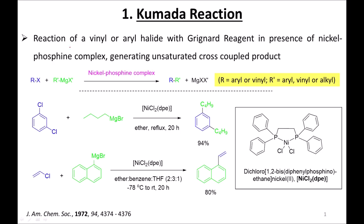Good evening everyone. Today we are going to talk about the Kumada reaction. Till now we have studied a lot of reactions, most of them palladium-catalyzed cross-coupling reactions. One different aspect of the Kumada reaction from all other coupling reactions is that it mostly uses nickel phosphine complexes as a catalyst. Till now, palladium catalyzed most coupling reactions, but in this particular case nickel is the main catalyst. Even palladium can catalyze these reactions, but nickel is mainly used.